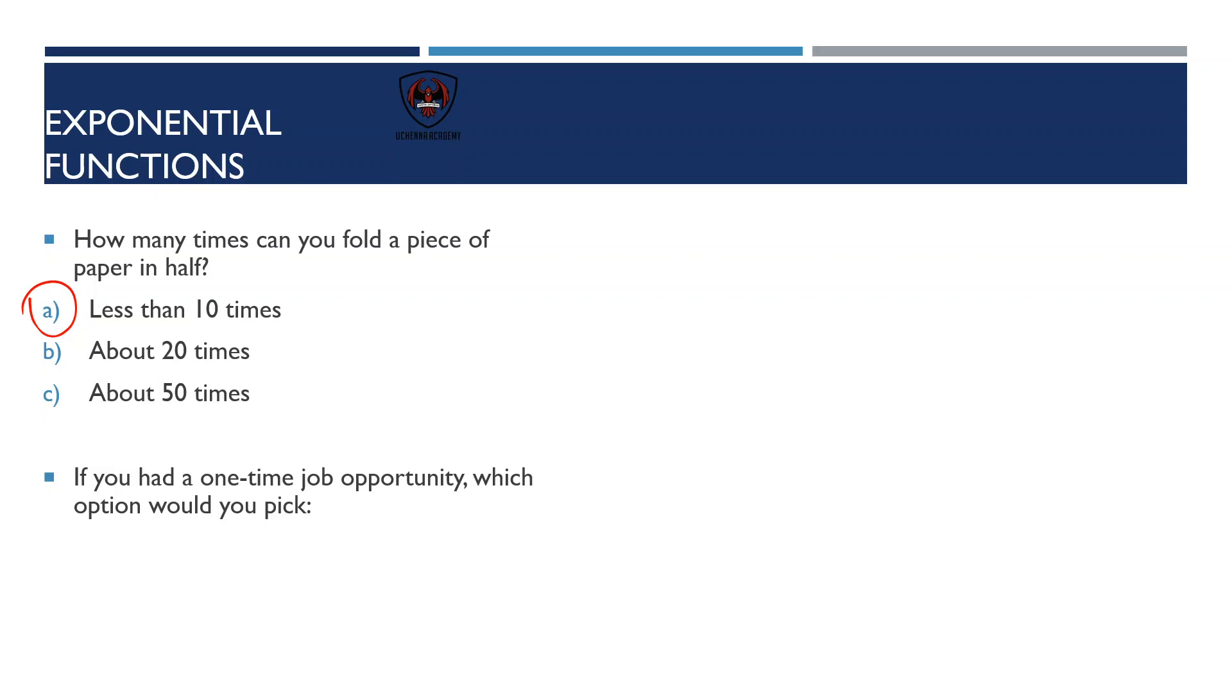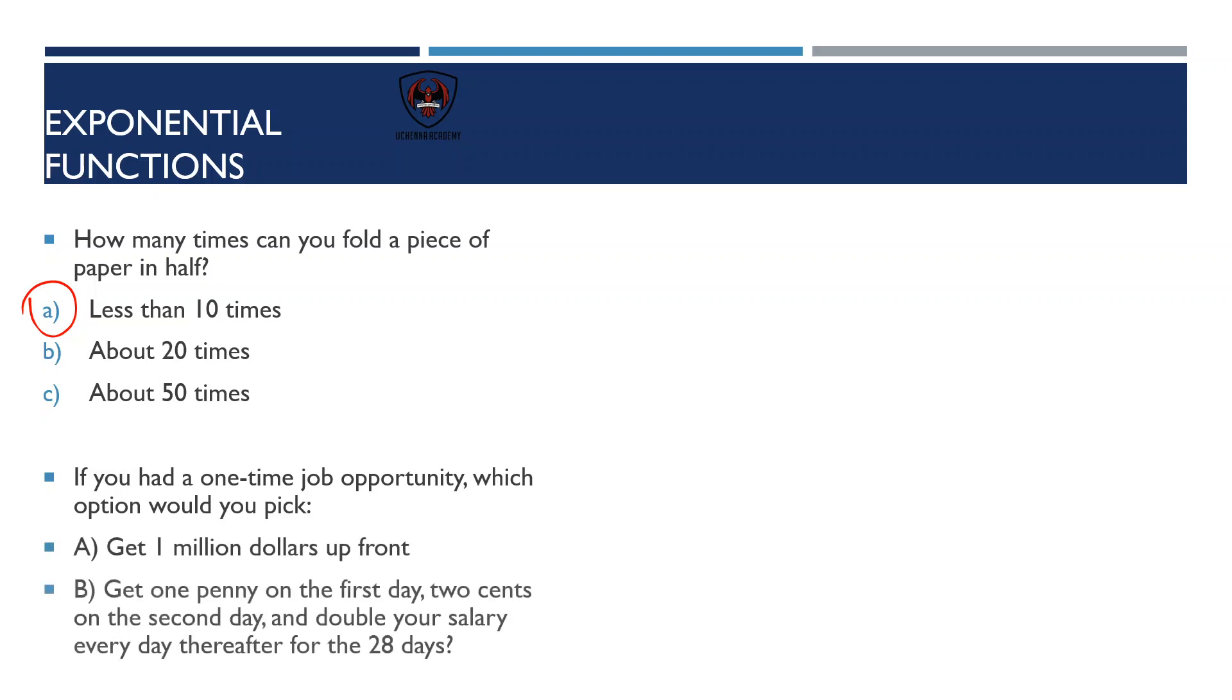Another typical question with exponents is: which would you pick? Would you rather get a million dollars up front, or get one penny today that doubles every single day? Most people would say forget the penny, I'll take a million dollars. But if you start to track the growth of the penny, you'll realize you go from one penny to two to four rather slowly. However, if you go up to day 10, your money starts to really skyrocket. And after 28 days, you actually end up with more than a million dollars.